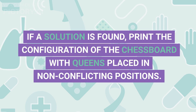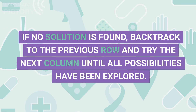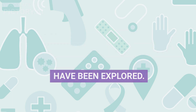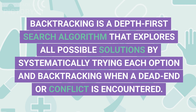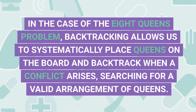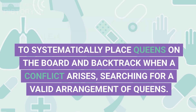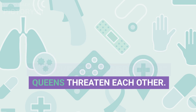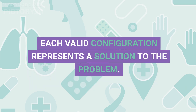6. Continue this process until all 8 queens have been successfully placed on the board without any conflicts. 7. If a solution is found, print the configuration of the chessboard with queens in non-conflicting positions. 8. If no solution is found, backtrack to the previous row and try the next column until all possibilities are explored. Backtracking is a depth-first search algorithm that explores all possible solutions by systematically trying each option and backtracking when a dead-end or conflict is encountered. By applying backtracking to the 8 Queens Problem, we can find all valid configurations where no two queens threaten each other.